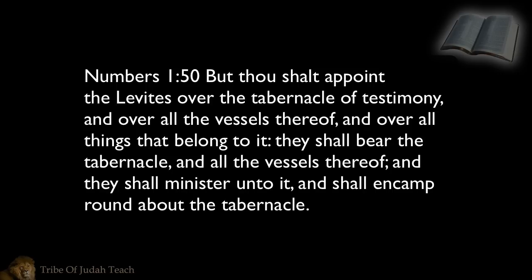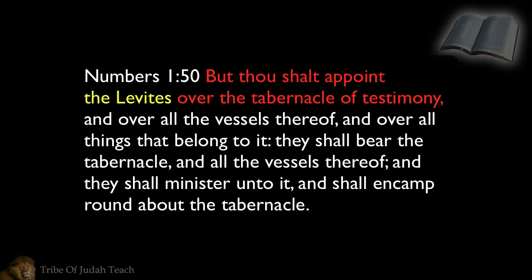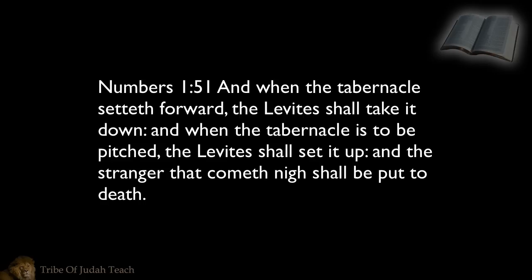Numbers 1 and 50 — this is the Most High talking to Moses. It says, but thou shalt appoint the Levites over the tabernacle of testimony and over all the vessels thereof and over all things that belong to it. They, the Levites, shall bear the tabernacle and all the vessels thereof and they shall minister unto it and shall encamp round about the tabernacle. So according to verse 50, the Levites were appointed to handle the tabernacle and everything that pertained to it, and the Levites had to set up their tents around the tabernacle. Verse 51 — and when the tabernacle set forward, the Levites shall take it down, and when the tabernacle is to be pitched, the Levites shall set it up.